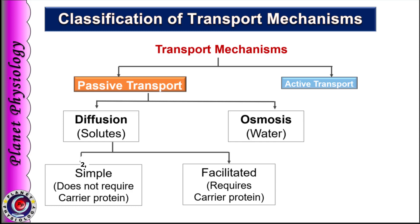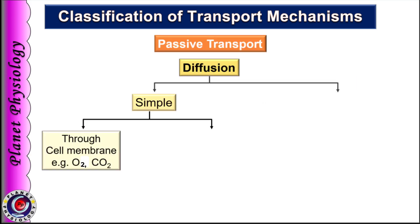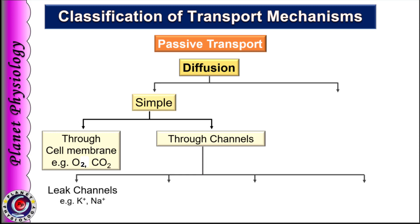Simple diffusion can take place directly through the cell membrane, as in the case of lipid-soluble substances like oxygen or carbon dioxide, or it can occur through channel proteins. Channels are utilized by polar molecules, that is water-soluble substances. Based on the type of channel protein used, simple diffusion can be further subdivided as diffusion through leak channels.